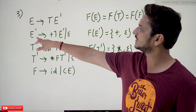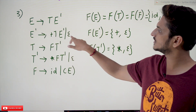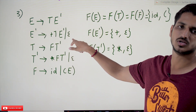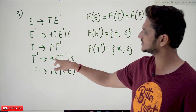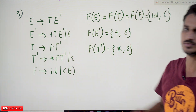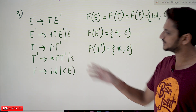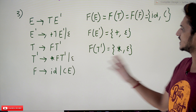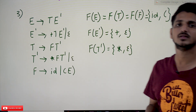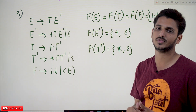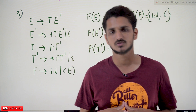Now coming to FIRST(E'): E' tends to plus T E' or epsilon, so FIRST(E') = {plus, epsilon}. FIRST(T') — T' tends to star F T' or epsilon — so FIRST(T') = {star, epsilon}. Star is a terminal symbol, epsilon is also possible. This is how we calculate the FIRST sets for a given context-free grammar.